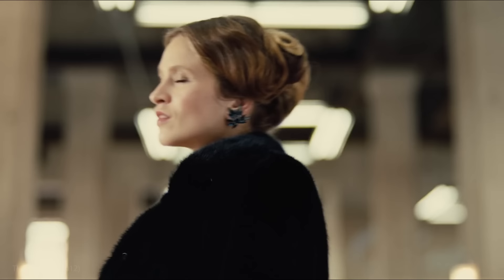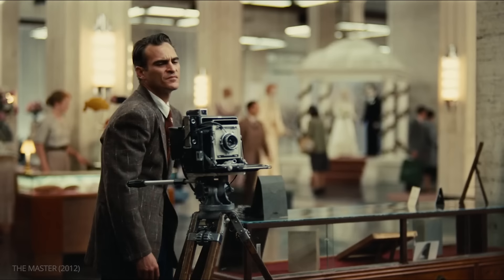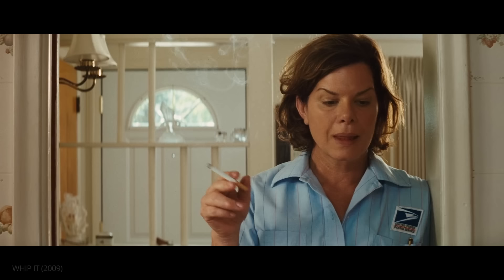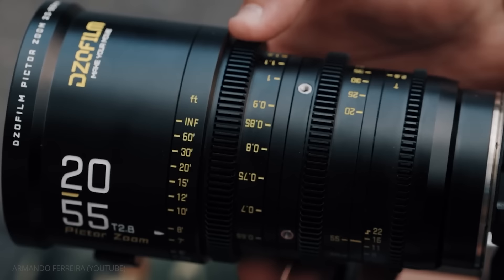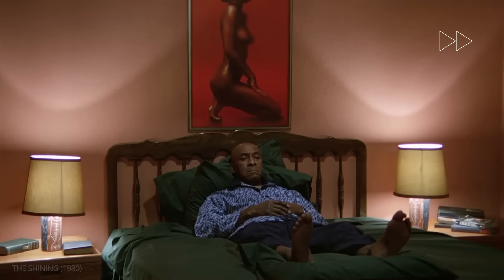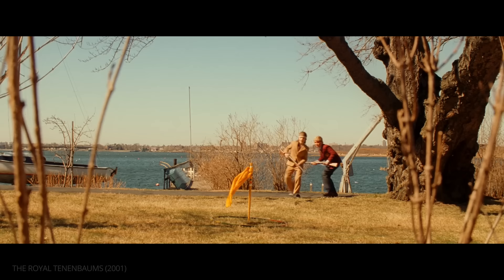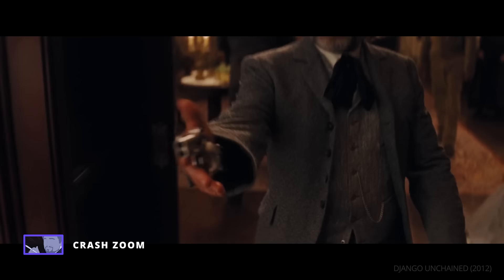The larger aperture can also capture a shallower depth of field, which is great for isolating subjects as in The Master. Although zoom lenses have smaller apertures, cinematographers can shoot a wide, medium, and close-up without changing their lens, saving valuable time on set. For more on how to creatively use the zoom function, make sure to check out our previous episode on camera movement.